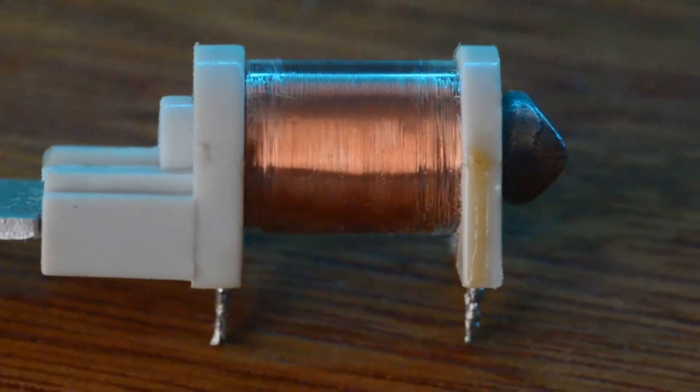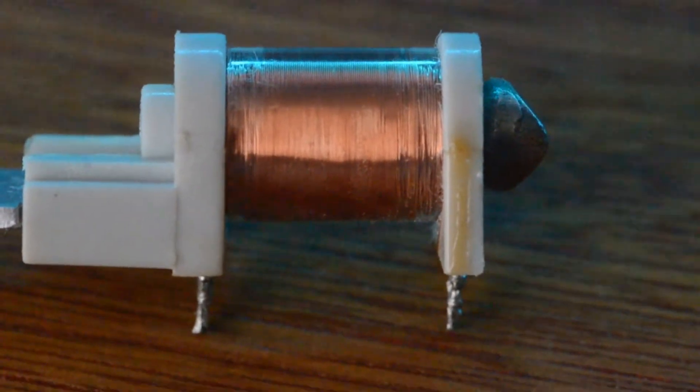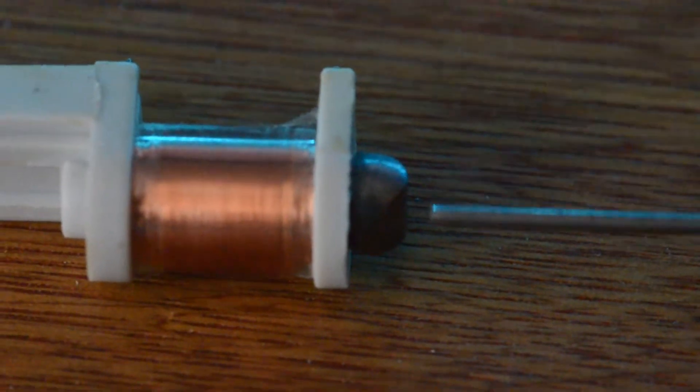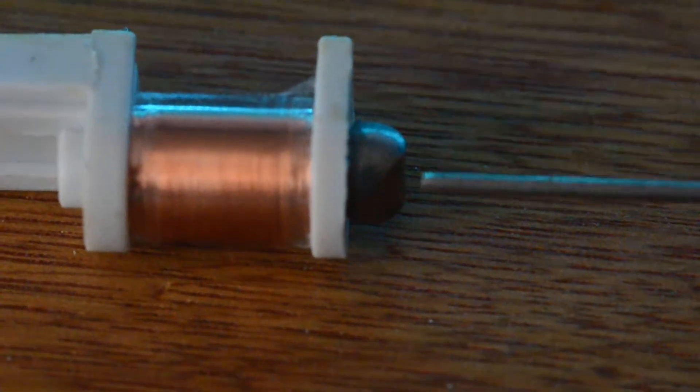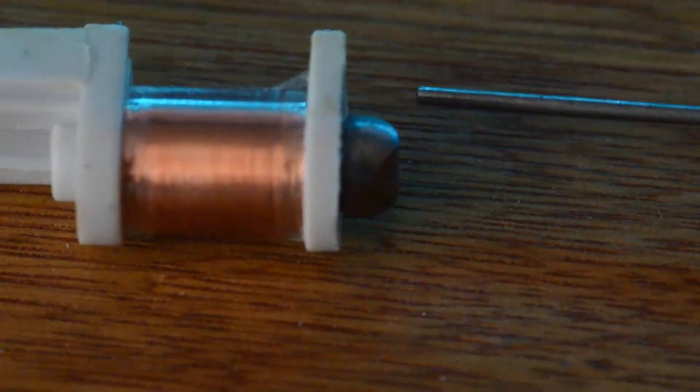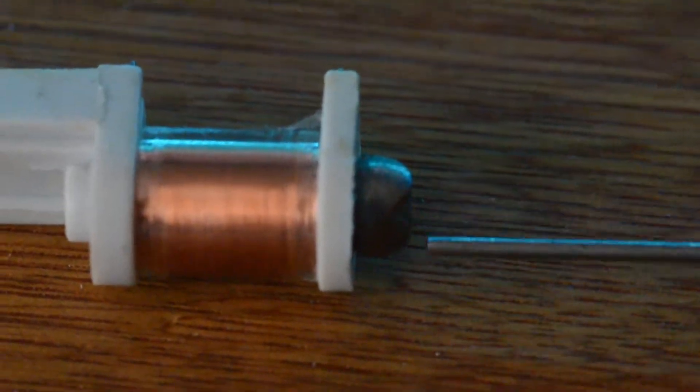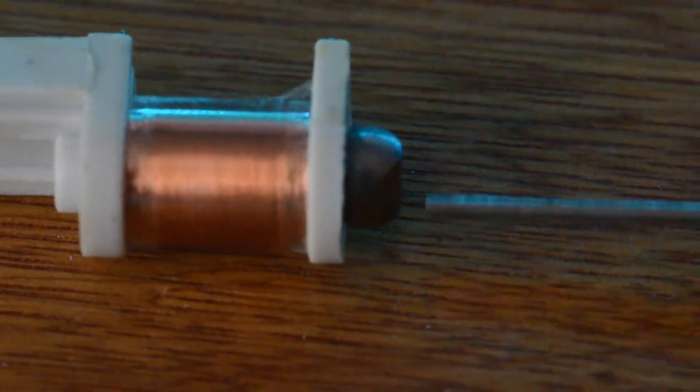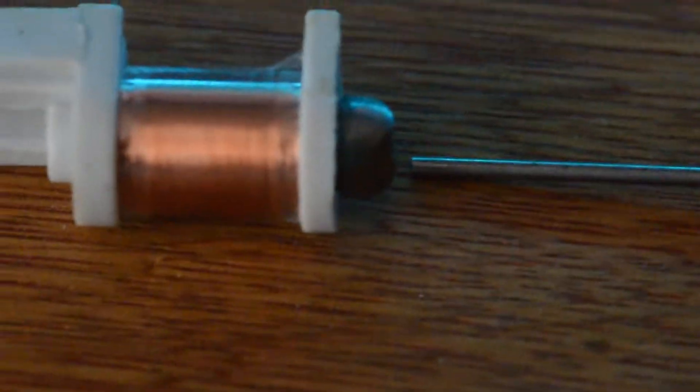This works by having a magnet surrounded by a coil of copper wire. When the tine moves the magnetic field follows this movement. This creates a magnetic field that moves through the coil and due to electromagnetism a small current is generated.